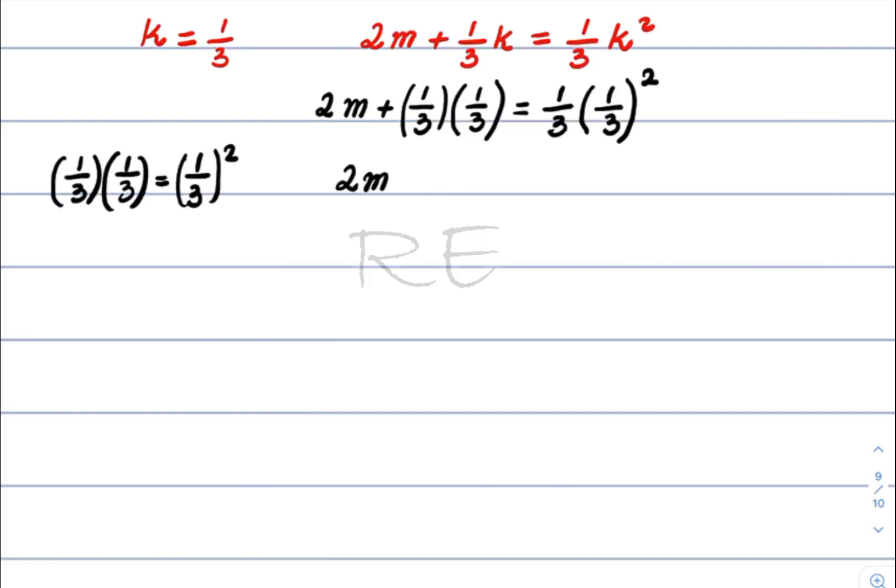Therefore, we get 2m plus one times one is one, and three times three is nine. One-third squared equals one-ninth.